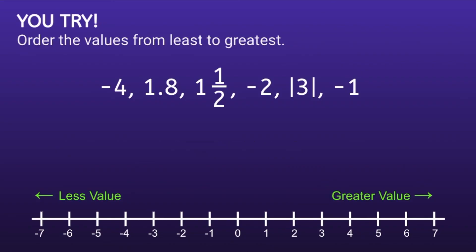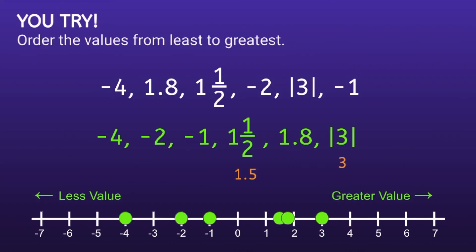The numbers in order would be negative 4, negative 2, negative 1, 1 and 1 half — which is equivalent to 1.5 as a decimal — 1.8, and finally the absolute value of 3, which is 3. If you had any of these out of order, I would recommend you pause, review your work, and see if you can find your mistake. Thank you for watching!